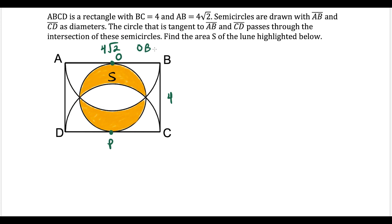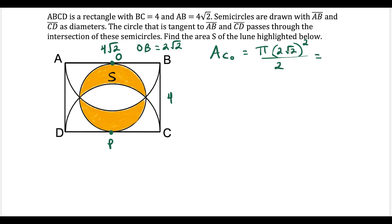What I want to do first is find the radius. OB is the radius of the top semicircle — it's half of the diameter. So if you do four radical two divided by two you get two square root two. Now we can find the area of the semicircle with center O: that's pi times the radius squared divided by two because it's a semicircle. The radius is two square root two, so two squared is four, radical two squared gives us two, and four times two is eight. So we have eight pi divided by two, which equals four pi.